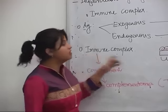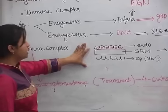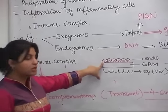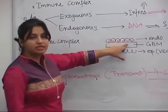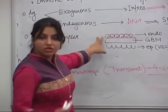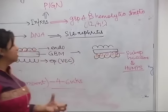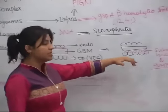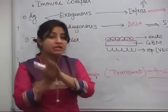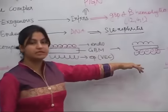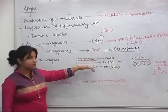The immune complexes in PIGN are initially deposited in the sub-endothelial location, inciting high inflammation. Later, for reasons not yet known, these deposits dissociate and move to the sub-epithelial site. They are large deposits and are also known as humps. In later stages of PSGN, the deposits will be seen in the sub-epithelial site, but in initial stages they can also be seen in sub-endothelial sites.